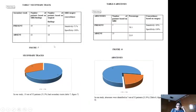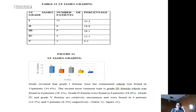Regarding secondary tracts, 10 out of 32 patients (31.3%) had secondary tracts. Abscess was identified in 7 out of 32 patients (21.9%). According to St. James grading, grade 1 fistula was the commonest, found in 11 patients (34.4%). The second most common was grade 3 fistulas, found in 9 patients. Grade 2 fistulas were found in 6 patients. Grade 4 and grade 5 fistulas were relatively uncommon, found in 4 patients (12.5%) and 2 patients (6.3%) respectively.